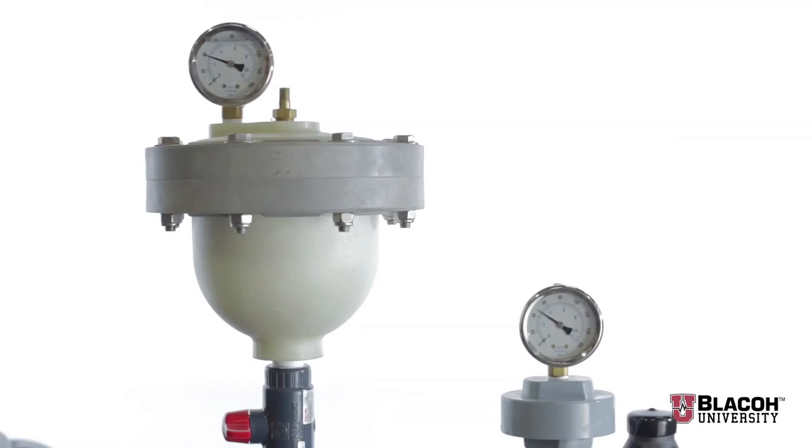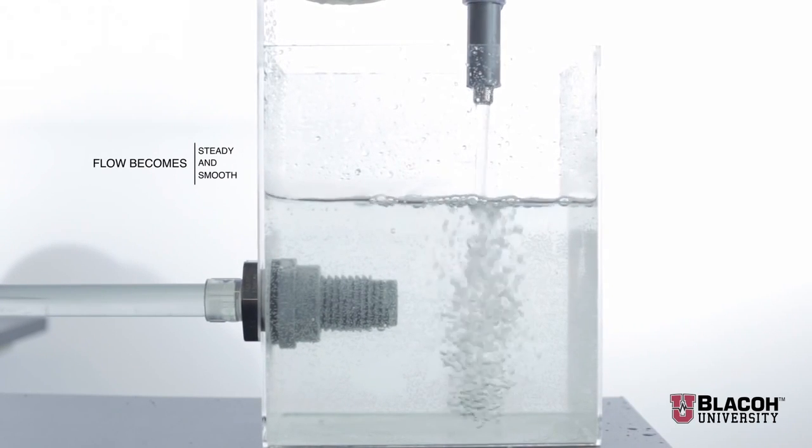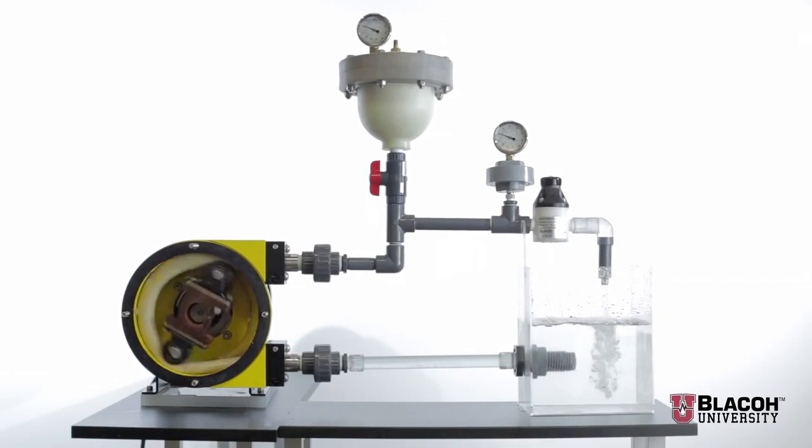As we activate the dampener by opening an isolation valve, you'll notice that instantly the flow becomes steady and smooth, centrifugal-like, and that the needle on the pressure gauge is nearly stabilized, indicating that there are no more pressure swings, thus protecting piping and other system components.